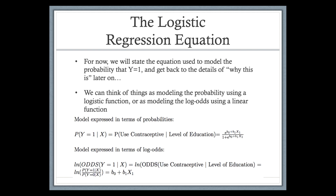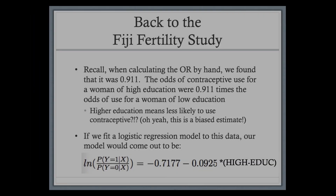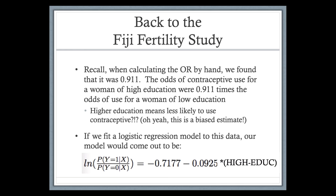The equation for the probability is the logistic function: e to the (b0 plus b1*X1) divided by 1 plus e to the (b0 plus b1*X1). Without getting too sidetracked by that equation, conceptually we can model the probability of disease or contraceptive use as some function of the X variables. We can also think of the same model as modeling the log of the odds of disease — or the log of the odds of using contraceptives — as a linear function: b0 plus b1*X1.